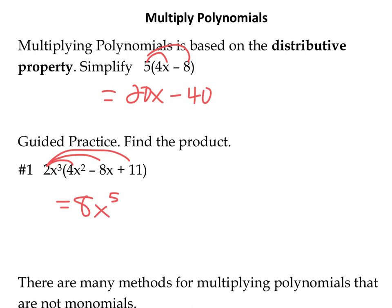So 3 plus 2 gives us 8x to the 5th. Then 2x³ times negative 8x² — pay attention to the signs — that's negative 16, from 2 times negative 8, giving x to the 4th. And then plus 22x to the 3rd. When multiplying polynomials, you multiply a monomial times another monomial: multiply the coefficients, and for variables with the same base, add their exponents.